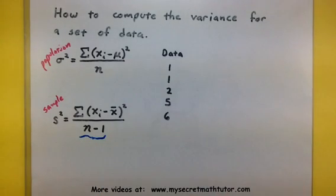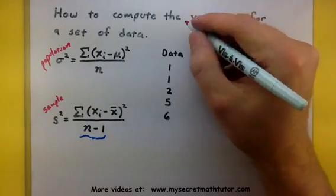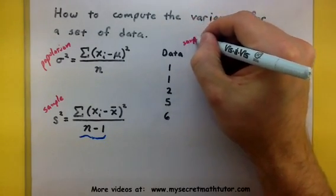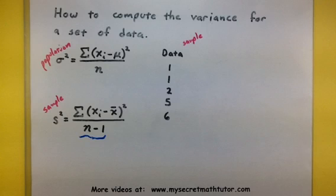Alright, so let's take a look at how this works by taking a very small set of data: 1, 1, 2, 5, and 6. And I'm going to assume that this is all from a sample. You really do have to look at the context of the problem to figure that out, but just for now so you can see how the formula works, we're going to go off of that assumption.